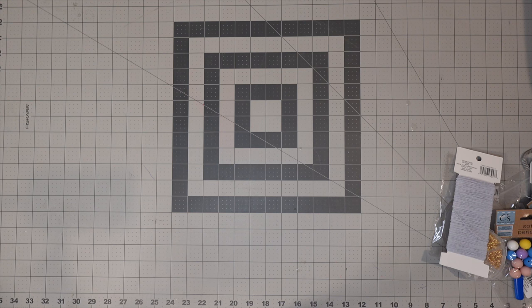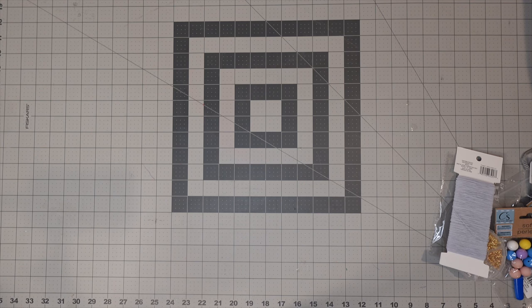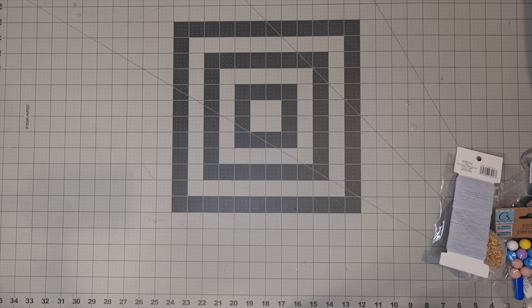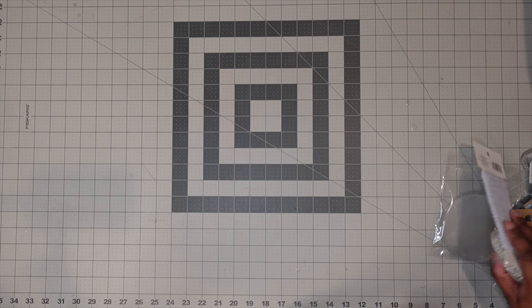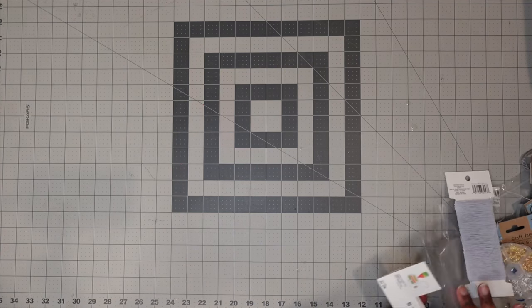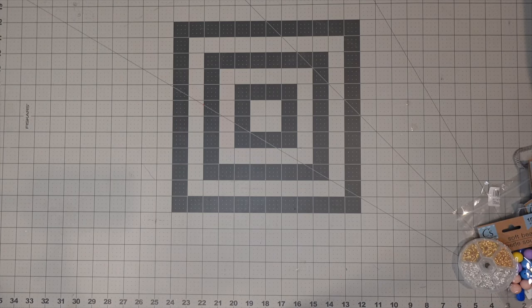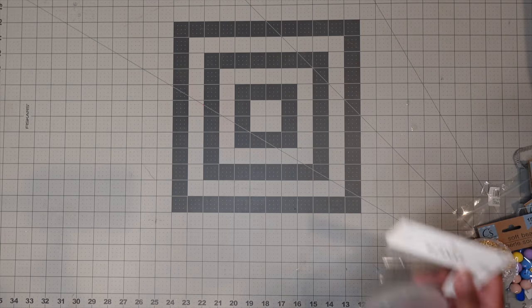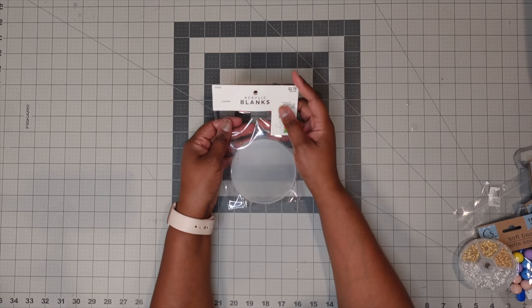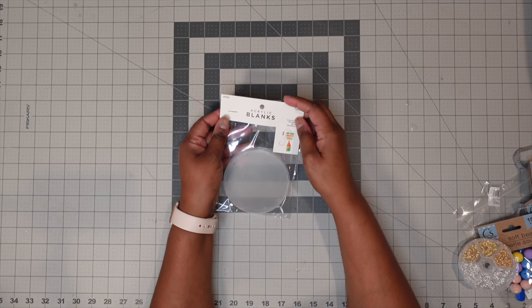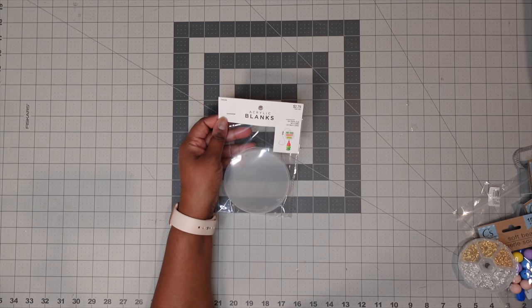So first, we're going to go over the materials that we're going to be using, and I'm going to let you know where I purchased everything from. So first, we are going to need our acrylic blanks. I already opened this, but I did want to show you what the packaging looks like. So this is the acrylic blanks that I purchased. I already took one out.